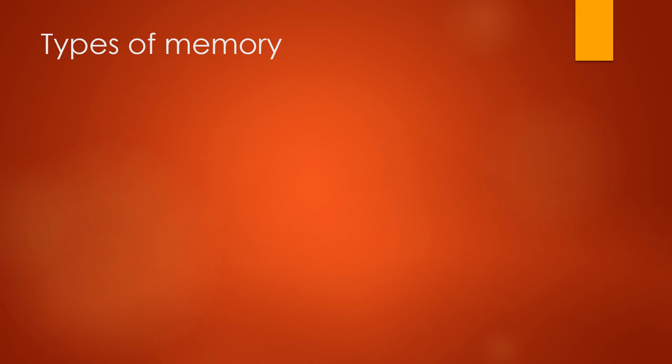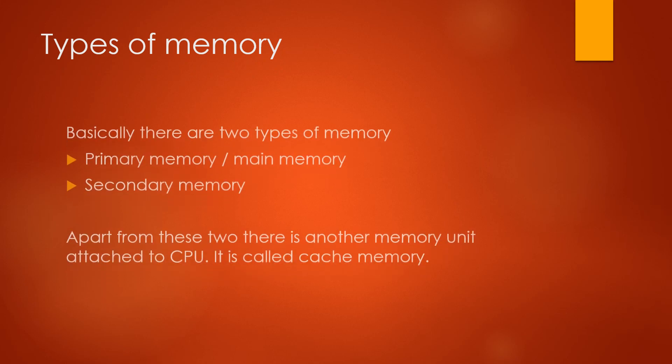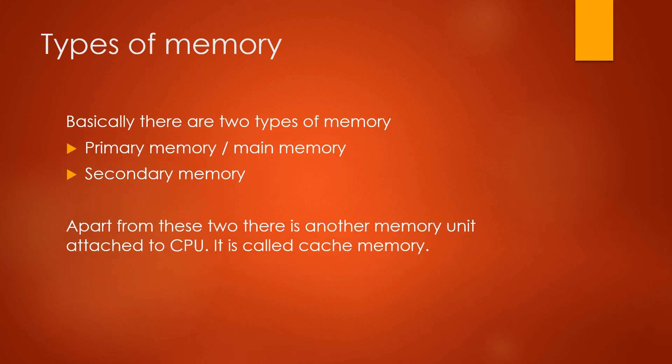Basically, there are two types of memory: primary memory or the main memory, and secondary memory. Apart from these two, there is another memory unit attached to the CPU. It is called the cache memory.